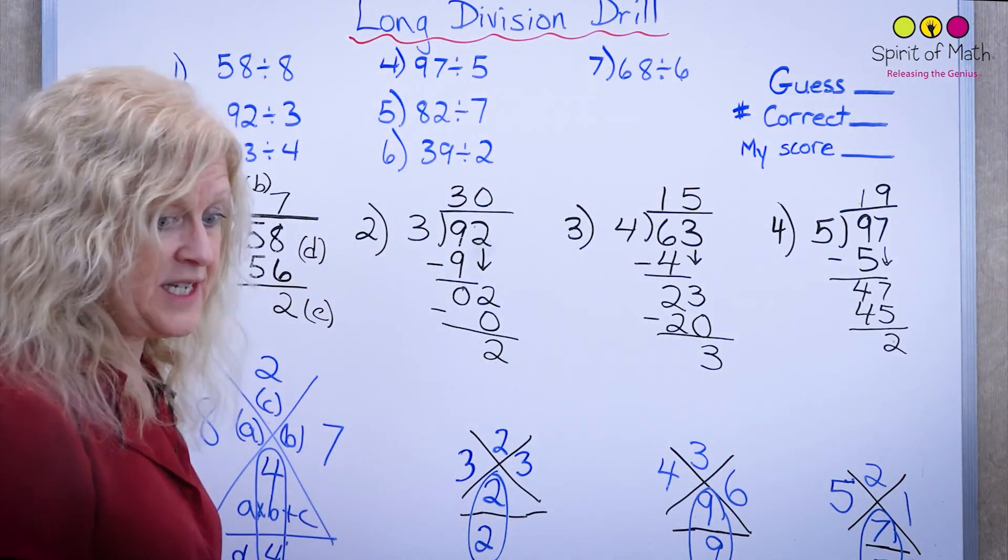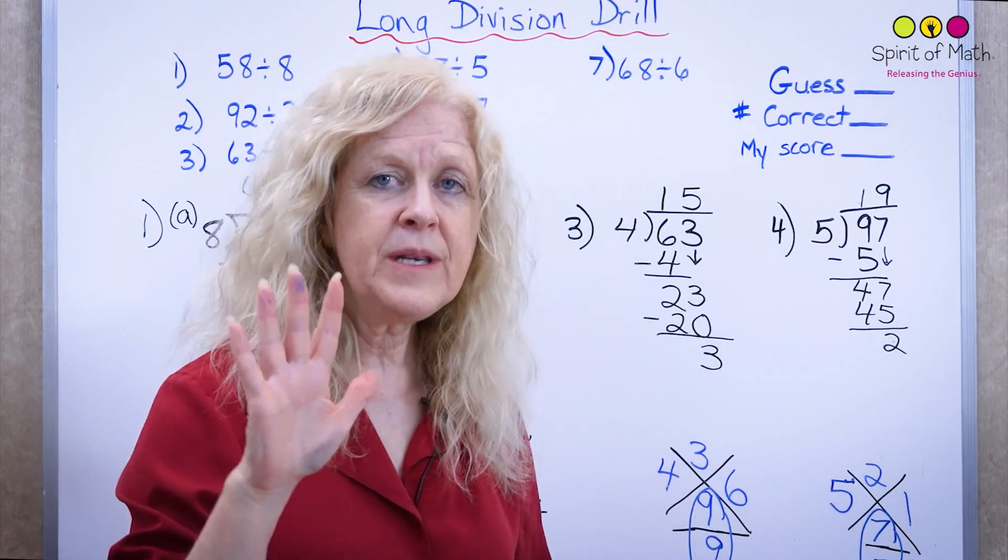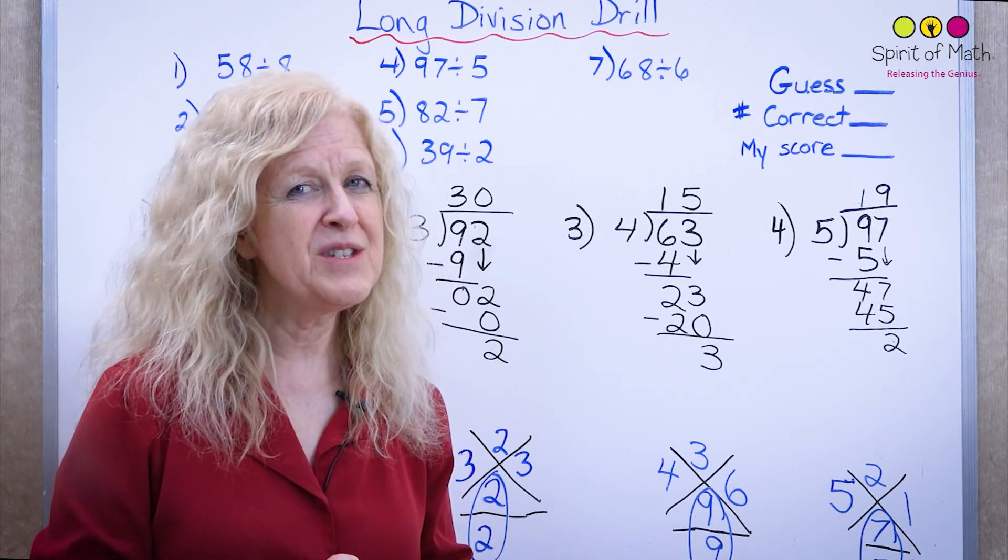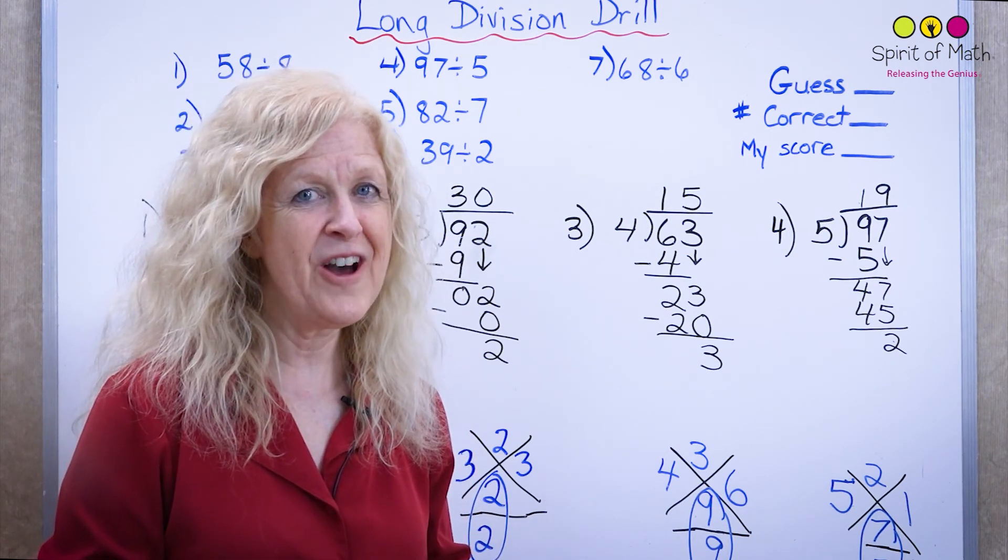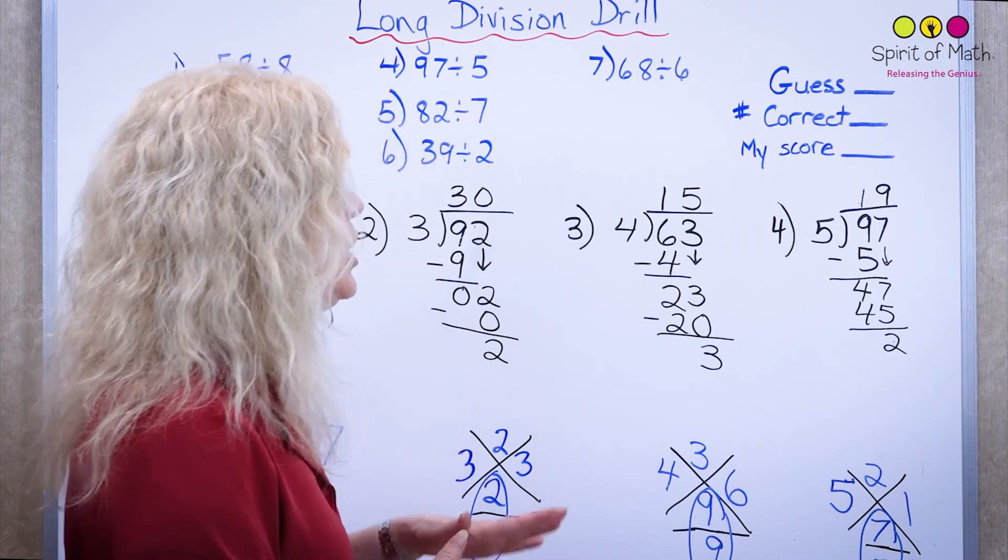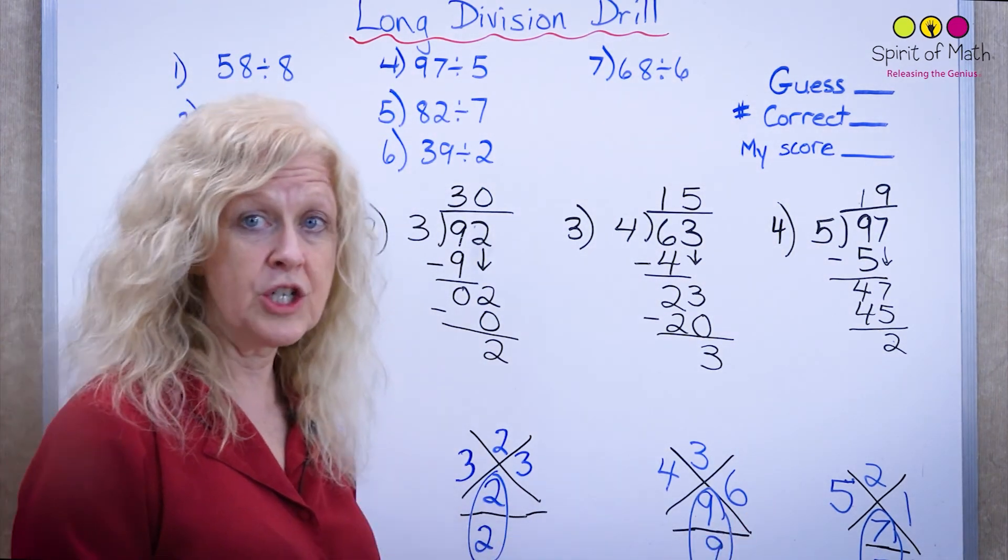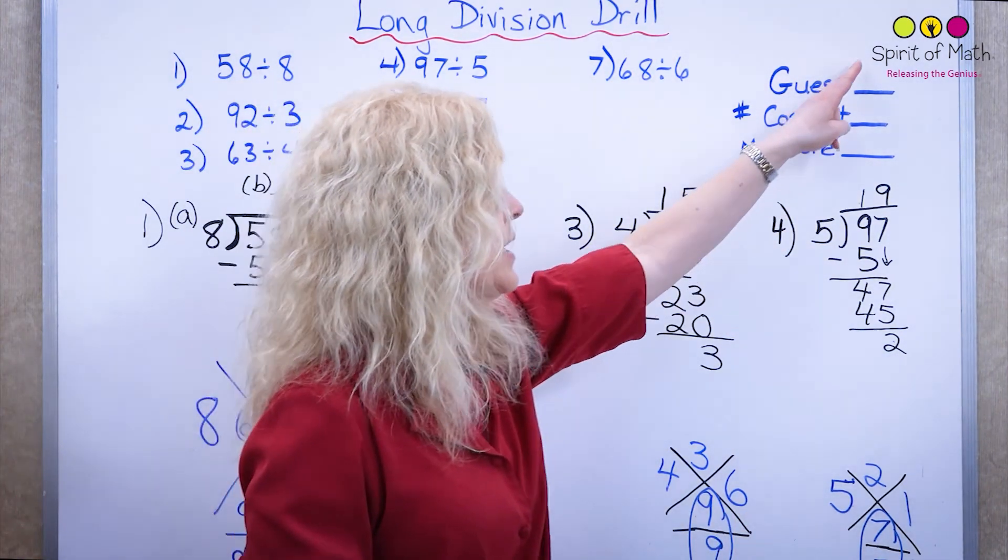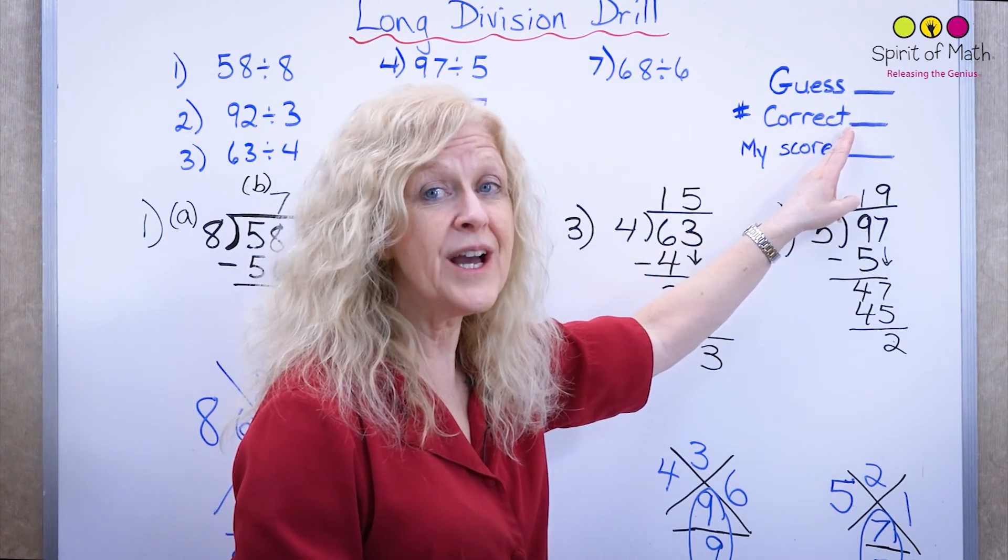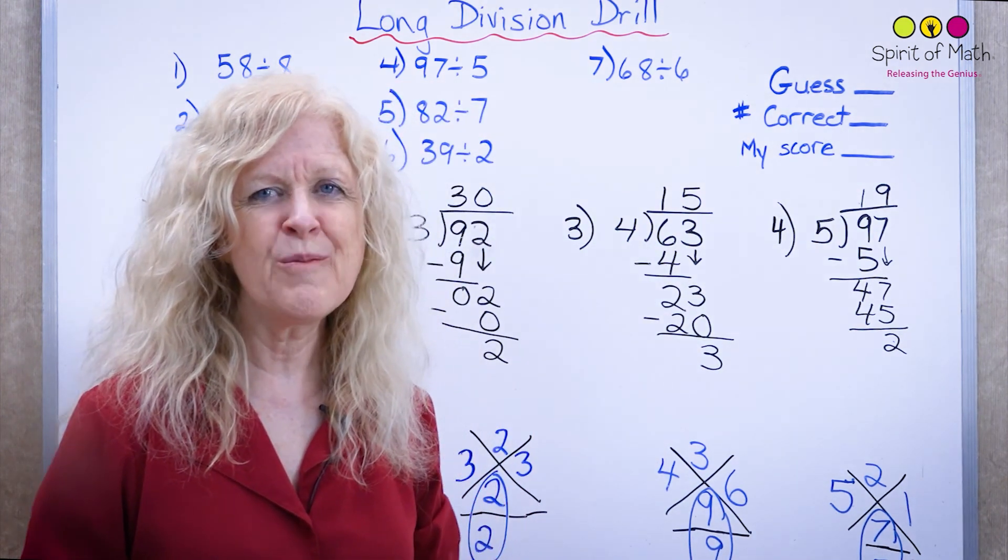And then you would just continue depending on how many you got correct. So you have five minutes to do this, to try and get all seven done. Most students find this really tough to get it done in five minutes. But some students can do it. So again, you have to make a guess on how many you think you got right. And that's why you do the x check too. So you make that guess and then you find out how many you really got correct. And if your guess was correct, then you get an extra two marks, just like on the long multiplication.